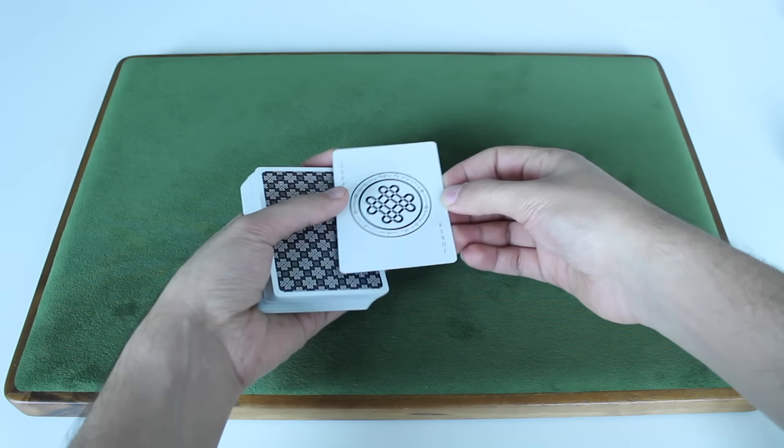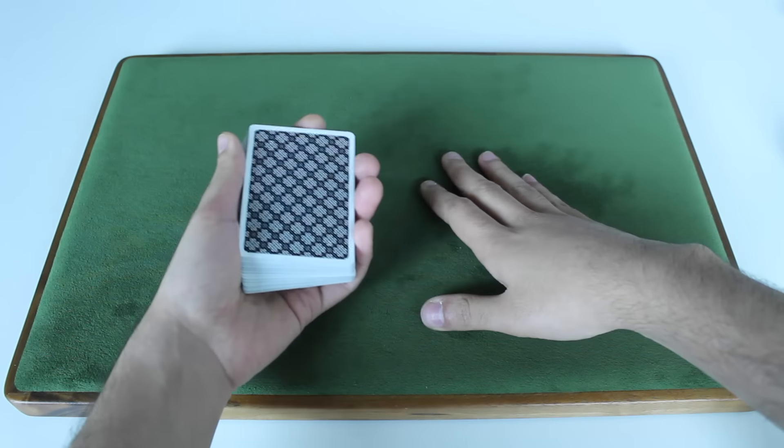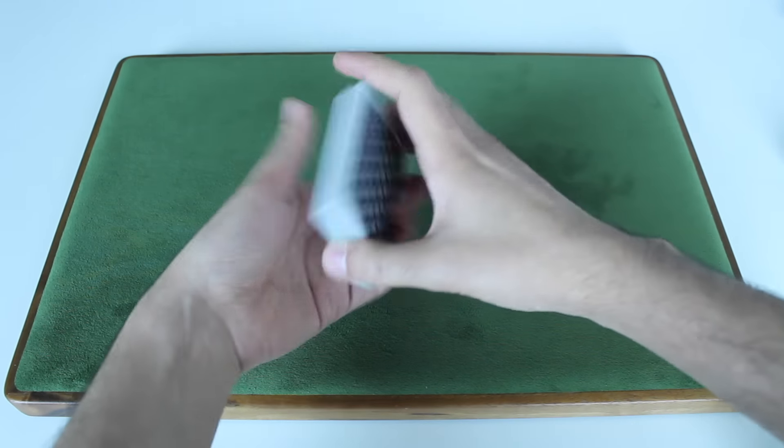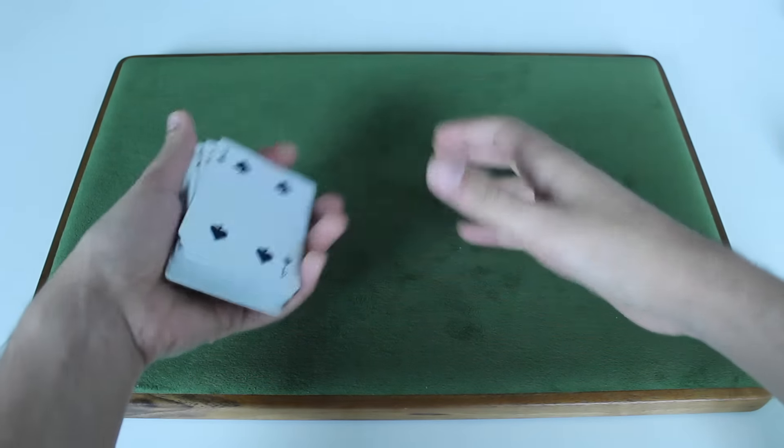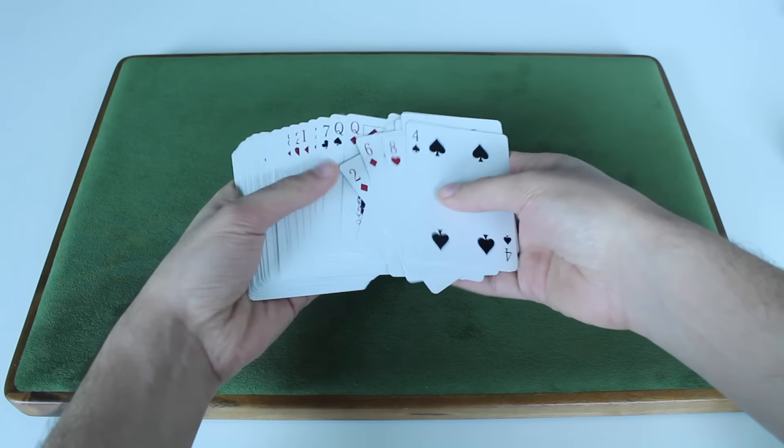Because sometimes if I want to set up for a trick, so for example, let's say the Joker's somewhere random in the deck, and I want to set up for an Ace trick, sometimes what I'll do is, under the motion of pretending to remove the Jokers, I'll be culling the Aces to the top of the deck.